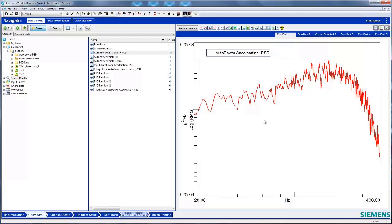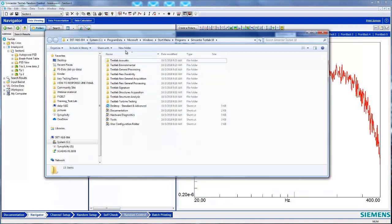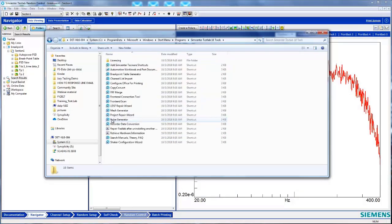First, add the data of interest to the input basket. Then, open the Breakpoint Generator tool by going into your Test Lab Start menu, going to Tools, and then opening the Breakpoint Table Generator.